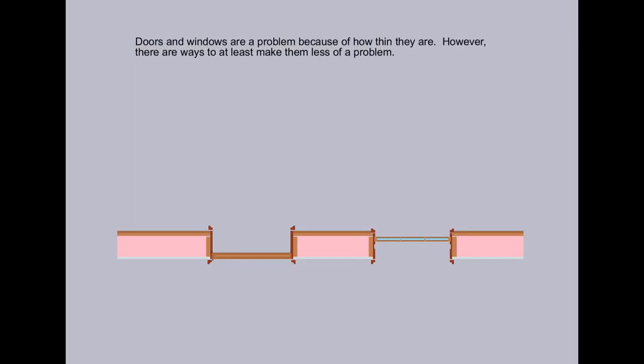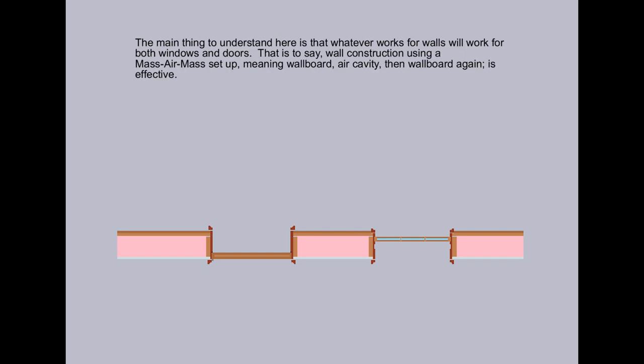Doors and windows are a problem because of how thin they are. However, there are at least ways to make them less of a problem. The main thing to understand here is that whatever works for walls will also work for windows and doors. That is to say, wall construction using a mass-air-mass setup, meaning wallboard, air cavity, then wallboard again, is effective.